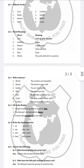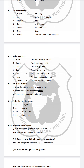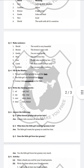Now question number 3 is make sentences. World — the world is very beautiful. Breeze — the breeze is very cold. Gentle — you are very gentle. Nice — you are a nice boy. Care — please take care of my box. Calm — we must calm our hair only. Cushion — can you pass me a cushion?